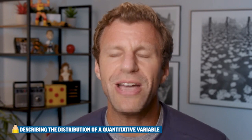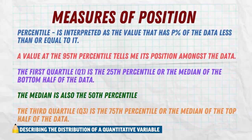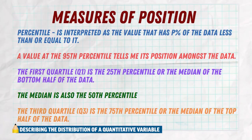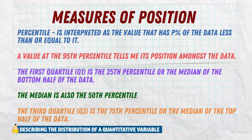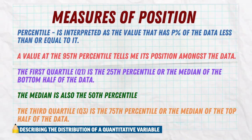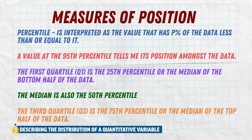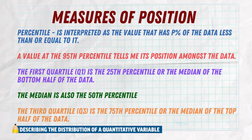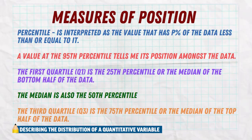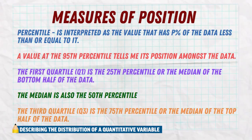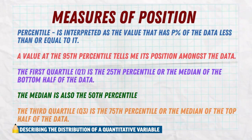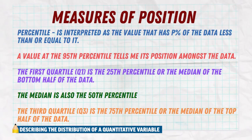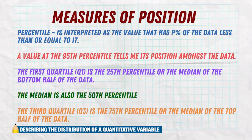We also have measures of position — values that tell you where you are in the data. Probably the most famous is the percentile, which you might hear about with SAT or ACT scores. A particular value's percentile is the percentage of data at or below that score. For example, if you score at the 95th percentile on the SAT, that means 95% of other students scored at your level or below, and only 5% were above you.